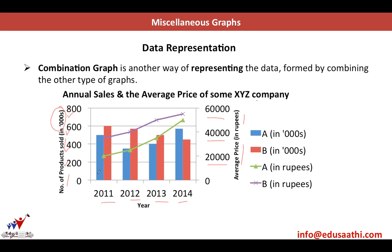Looking at the bar graphs, the blue and red ones — the blue bar graph shows units of product A sold in thousands, and the red bar graph gives units of product B sold in thousands for each year. For example, in 2011 about 500,000 units of product A were sold. The green line here shows the average price of product A, which was somewhere near 20,000 rupees. Similarly, we can find out for the other years and products. This is an example of a combination graph.